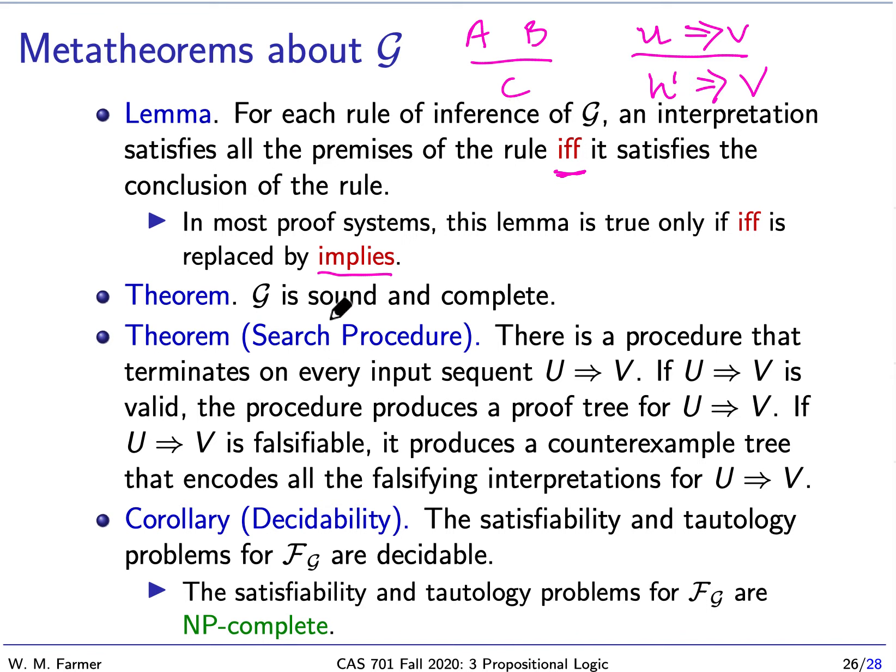We have a theorem that says G is sound and complete. There is a search procedure so that if we give it as input a sequent, if that sequent is valid, the procedure will produce a proof tree for that sequent. If the sequent is not valid, it produces a counterexample tree that encodes all the falsifying interpretations for U arrow V. This is a really nice algorithm, because it tells us everything we want to know. It tells us whether the formula is valid, and if it is not valid, it tells us all the ways it can be falsified.